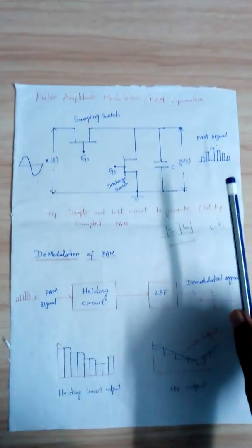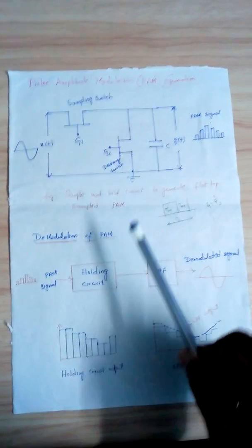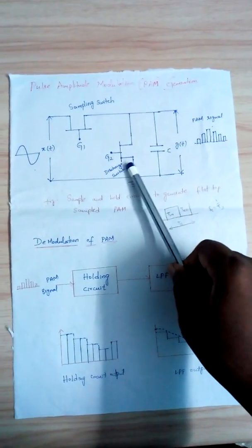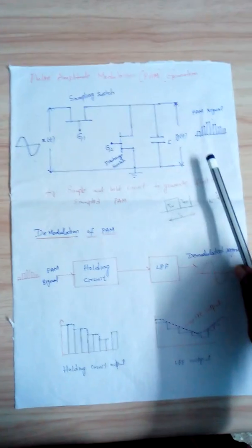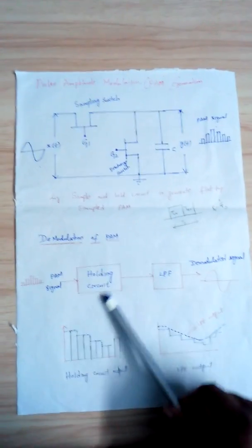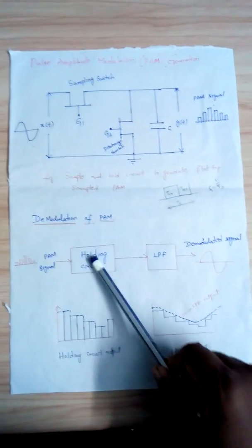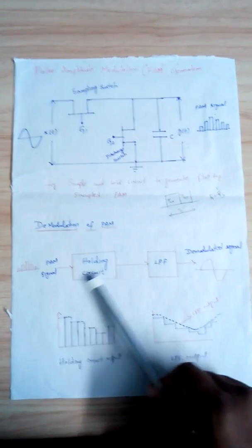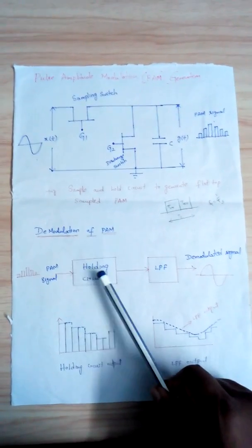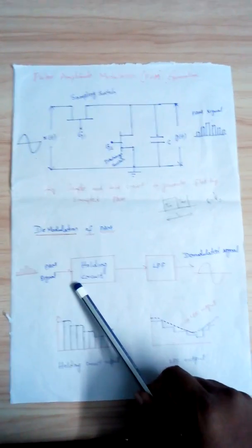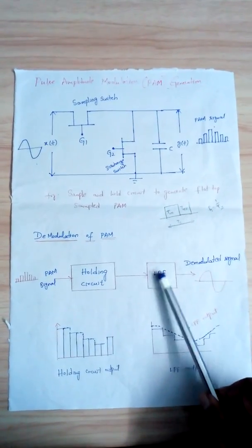Next we discuss demodulation of the PAM signal. The PAM output from the modulation stage is given as input to the demodulation circuit, which consists of a holding circuit followed by a low pass filter. The PAM signal enters the holding circuit, which holds the amplitude value until the arrival of the next pulse.